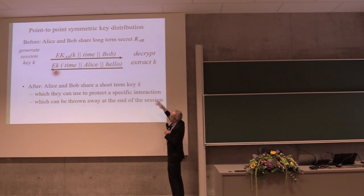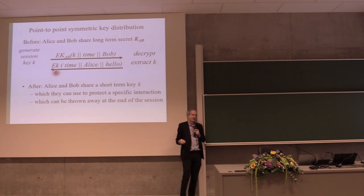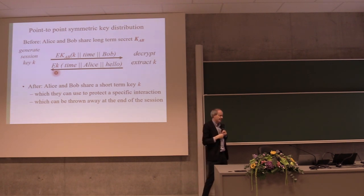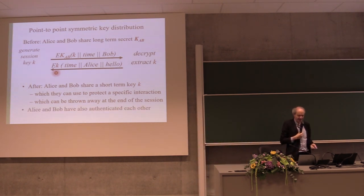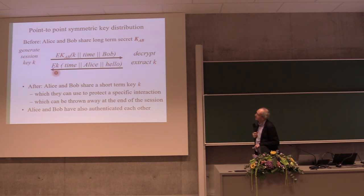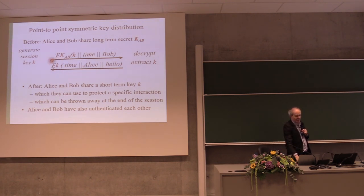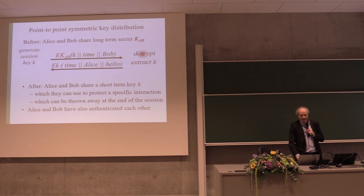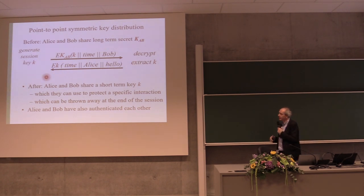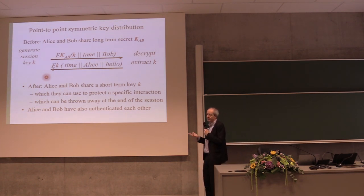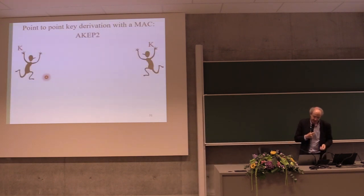This is how you establish a new session key from an existing key. The session key can be thrown away at the end, and if Alice and Bob have multiple sessions, each can have a different key — this allows separating sessions. This also provides authentication: by sending a fresh timestamp encrypted under the key known only to Alice and Bob, Bob knows Alice must be there and alive, and Alice knows Bob must have been there because only Bob can decrypt. This is an authenticated key agreement protocol with mutual authentication and explicit key authentication.